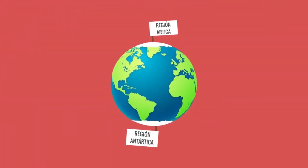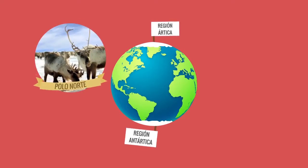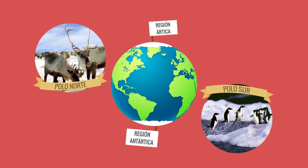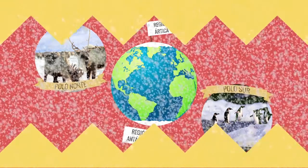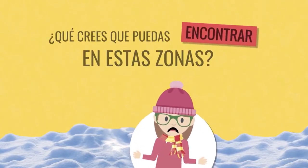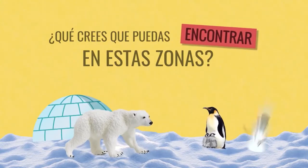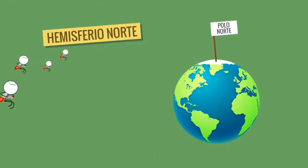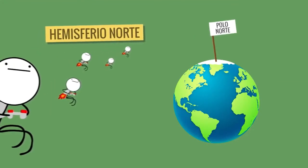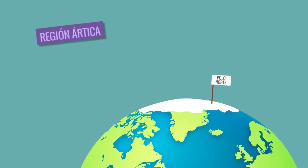Existen dos regiones polares: la región ártica, en el polo norte, y la región antártica, en el polo sur. ¿Qué puedes encontrar en estas zonas? Seguro pingüinos y osos polares. Para comprenderlo mejor, vayamos al hemisferio norte. En este hemisferio podrás encontrar el polo norte y también la región ártica, donde se encuentran Canadá, Alaska, Rusia y Suecia.